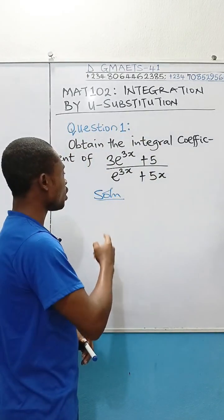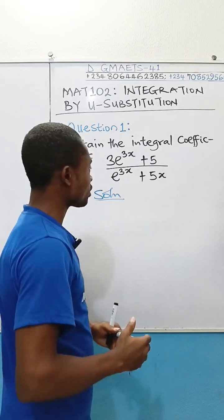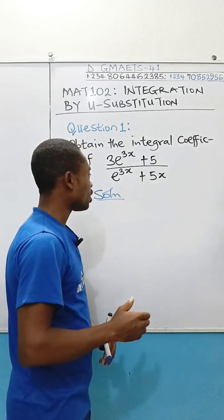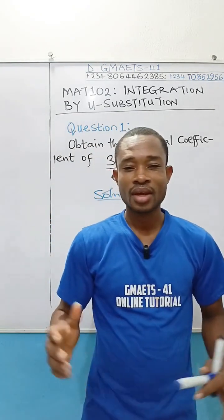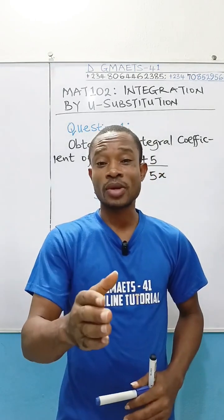Obtain the integral coefficient of 3 exponential 3x plus 5 all over exponential 3x plus 5x. How do we solve this problem? It's 1 plus 1.